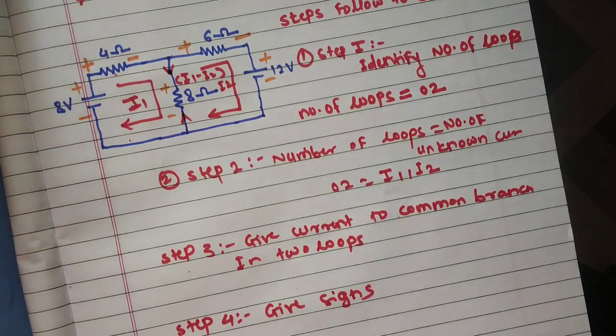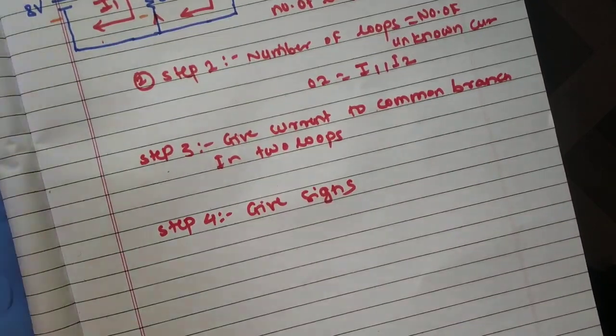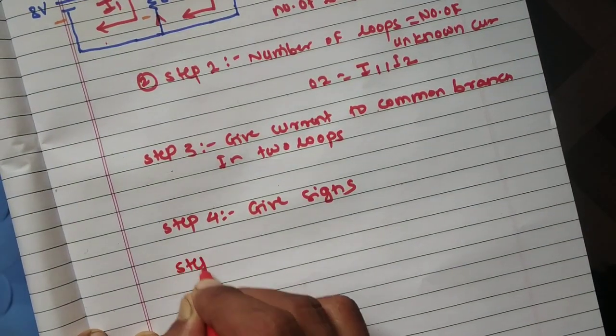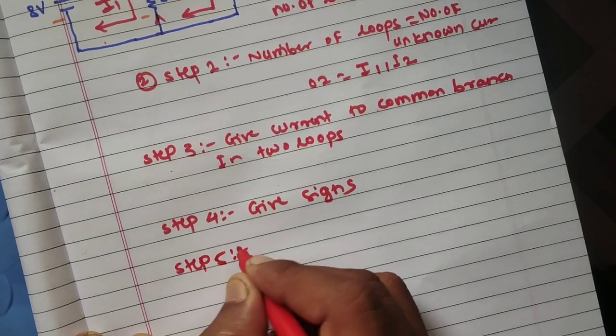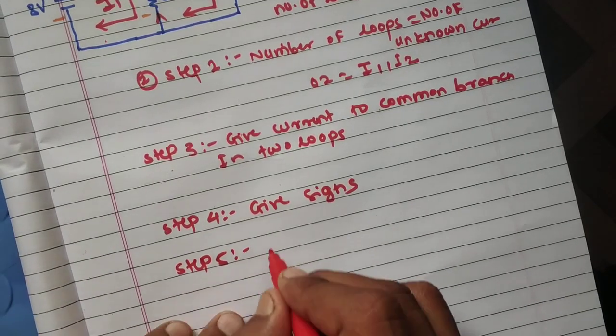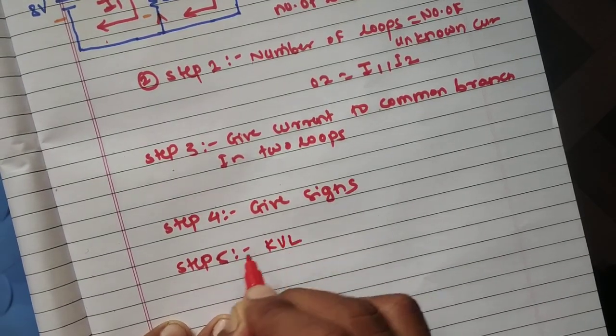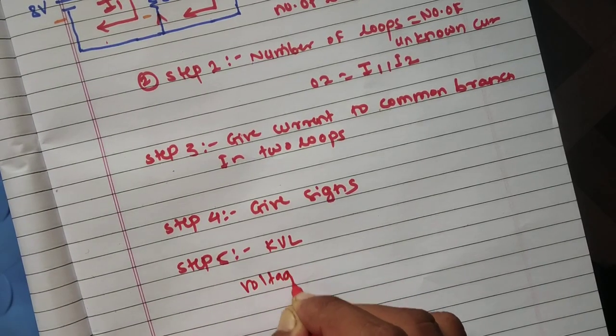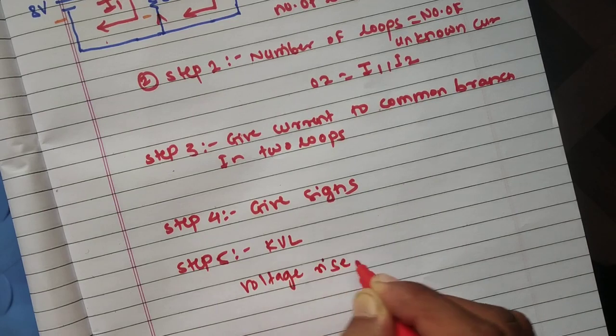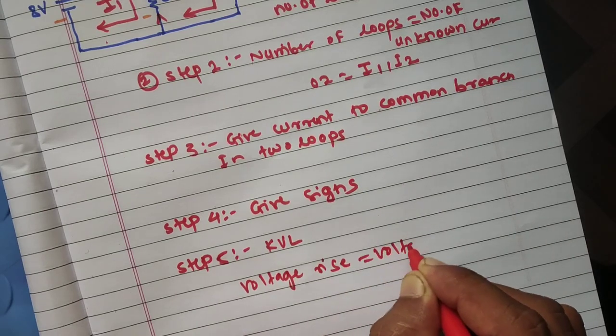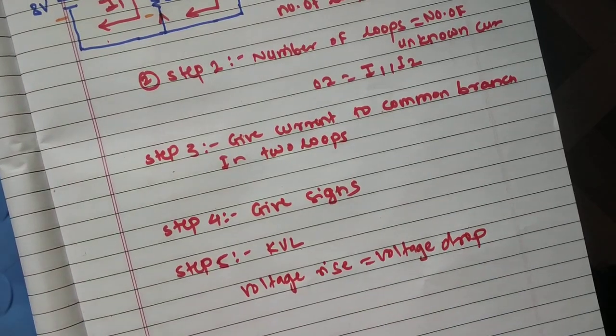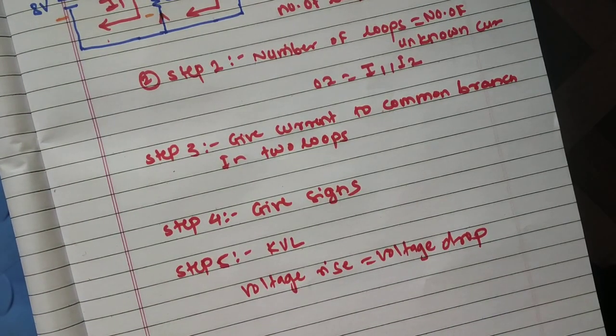So sign convention is used to solve Kirchhoff's voltage law problems. After giving the signs, step five is applying Kirchhoff's voltage law equation. Voltage rise is equal to the voltage drop.